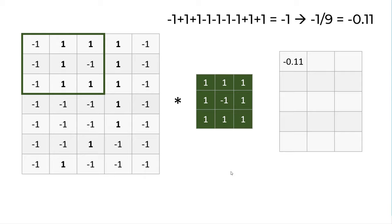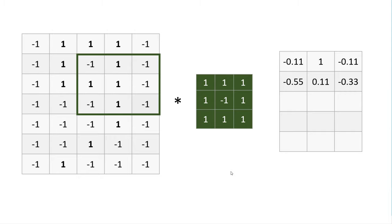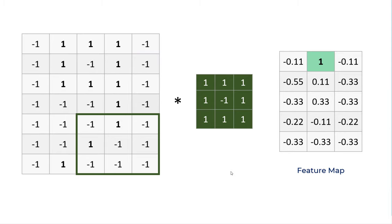So you do it for the second round of three by three grid. Here I'm taking a stride of one. You can take a stride of two or three. Also, you don't need to have three by three filter. You can have four by four or five by five filter. And then you keep on doing this for your entire number. And in the end, what you get is called a feature map.